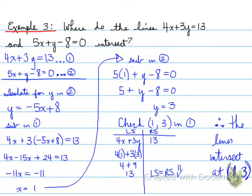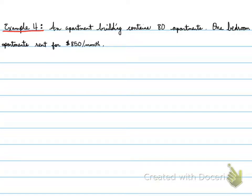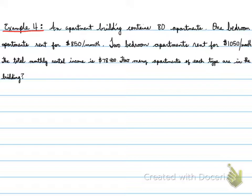Let's now move on to a little bit more complicated problem — a word problem. Example number four. An apartment building contains 80 apartments. One bedroom apartments rent for $850 per month. Two bedroom apartments rent for $1,050 per month. The total monthly rental income is $78,400. How many apartments of each type are in the building? We need to design a linear system that represents this word problem.